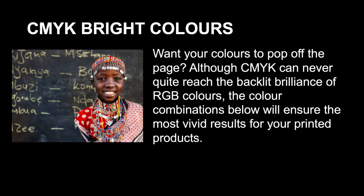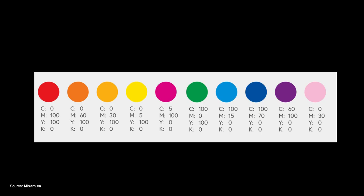Although CMYK may never quite reach the backlit brilliance of RGB, it is possible to create color combinations that produce vivid, rich colors. For example, for a rich red: Magenta 100%, Yellow 100%. For orange: Magenta 60%, Yellow 100%. For a yellow-orange: Magenta 30%, Yellow 100%. For bright yellow: Magenta 5%, Yellow 100%. For rich pink: Cyan 5%, Magenta 100%.